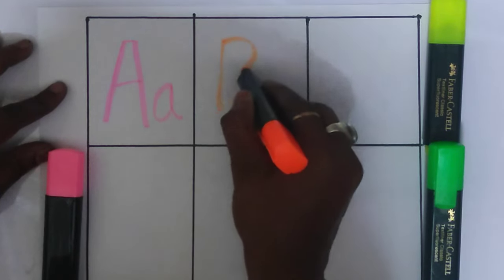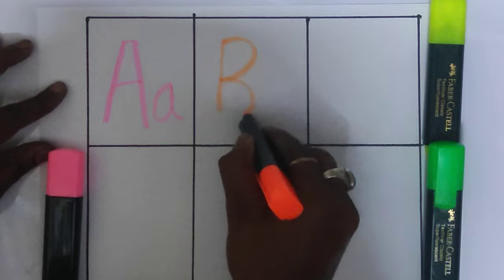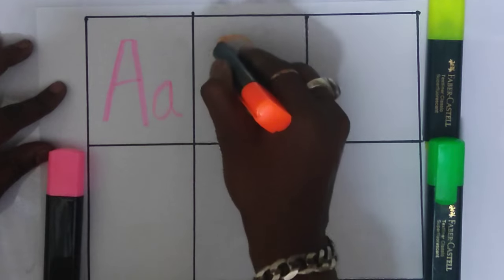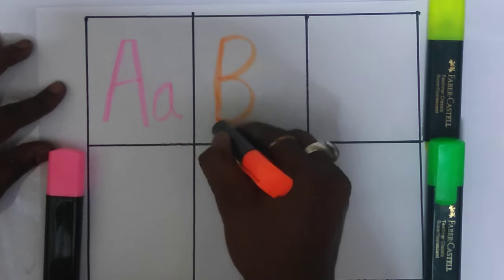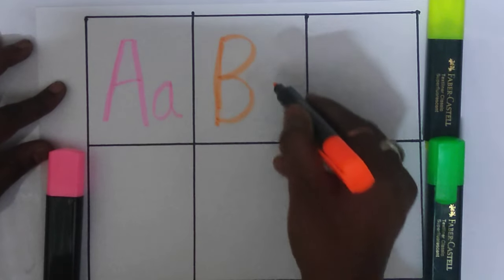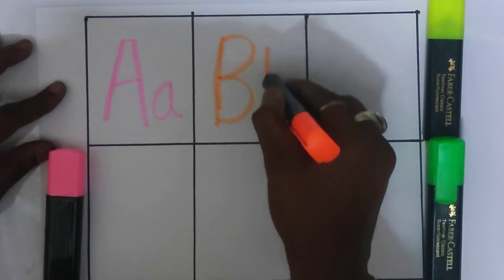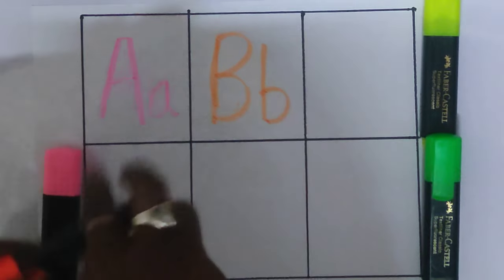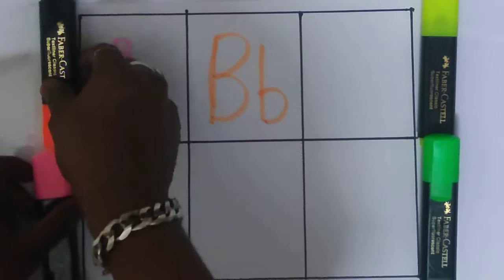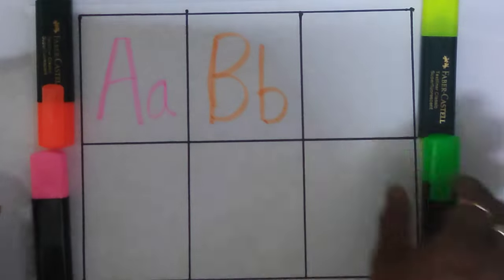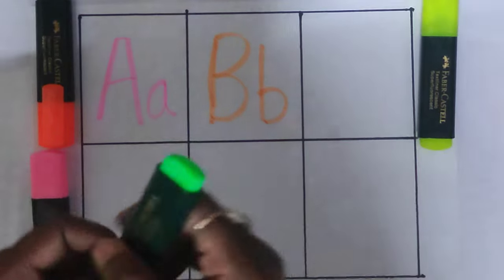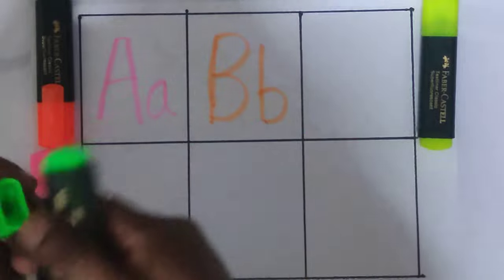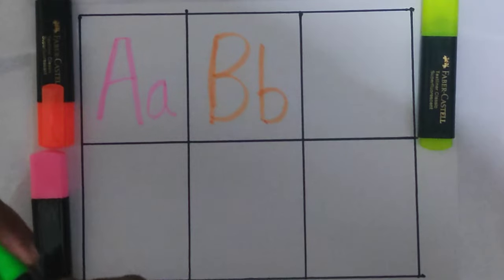Green color. B. B. B for ball. Small b. B for ball. Green color.